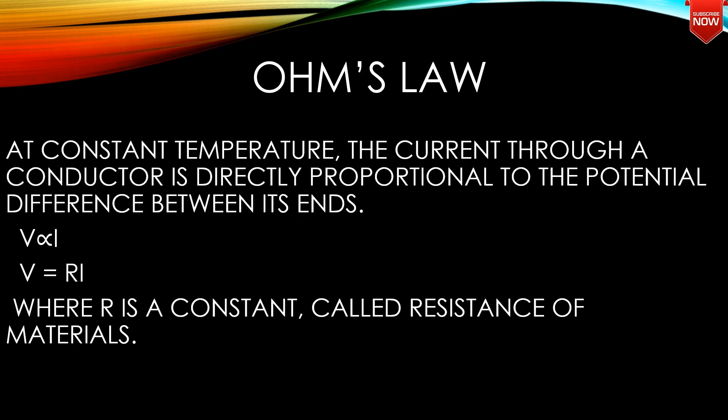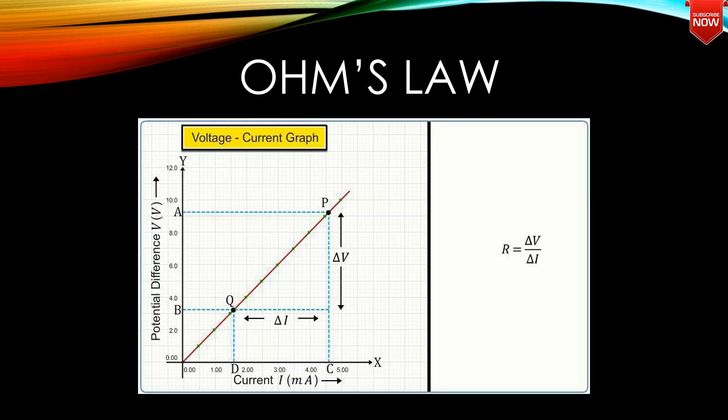The resistance is a scalar quantity and its unit is ohm. In the graph, on the x-axis we have the current and on the y-axis we have the potential difference. Ohm's Law gives a straight line in the graph. R is equal to delta V divided by delta I.